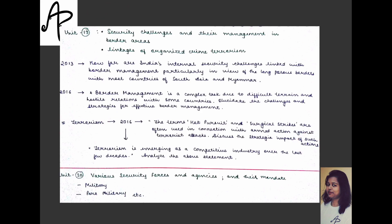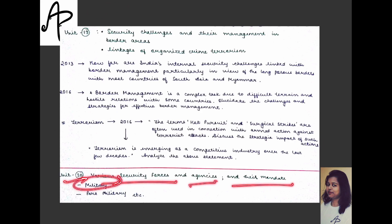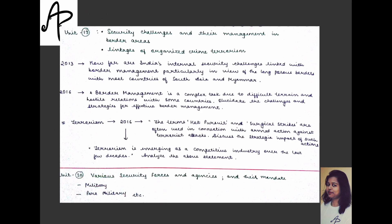Since surgical strikes were in the news at the time, they were directly asked. Terrorism is described as emerging as a competitive industry over recent decades — again current affairs. The last unit covers various security forces and agencies and their mandates — military forces, paramilitary, etc. You need to know their roles, and if any is in the news, its current context may be asked. Static questions are more likely here, so any handy material covering different security forces and agencies — their purpose, when formed — is useful.